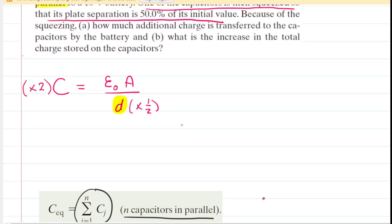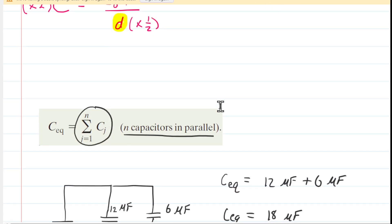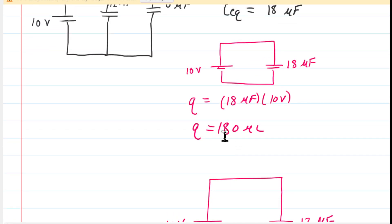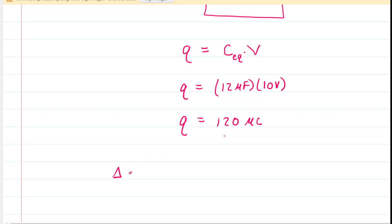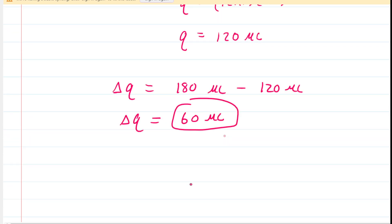Now we can answer the question. It asks how much additional charge is transferred to the capacitors, and what is the increase in the total charge stored. Those are the same question. Originally we stored 120 microcoulombs, and now we have 180 microcoulombs. The increase in charge is the final amount subtracted by the initial amount, which is 60 microcoulombs. By taking one capacitor and shrinking its plate separation, we increased its capacitance, which in turn increases the amount of charge that this circuit can store. That is the correct answer to both parts of the question.